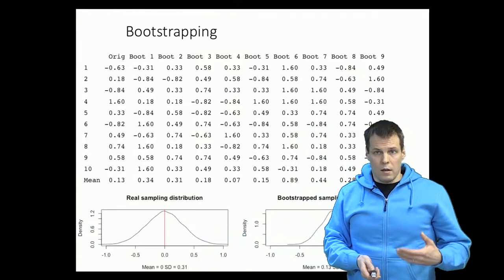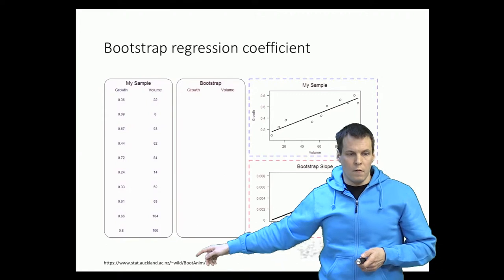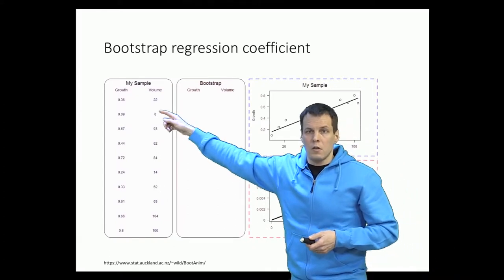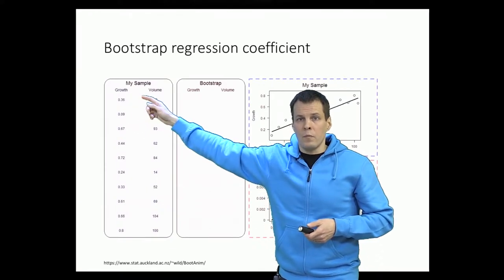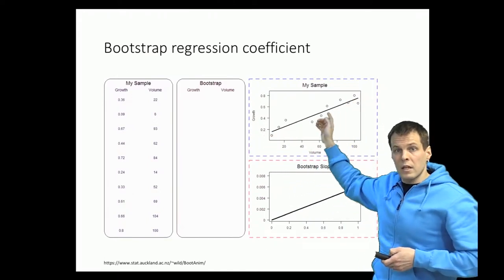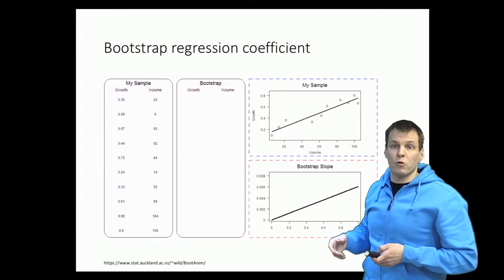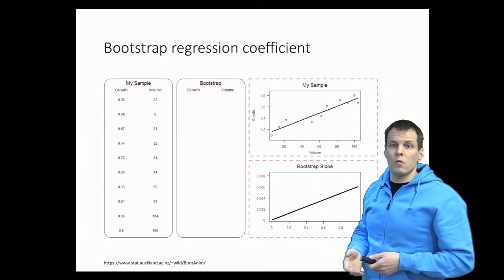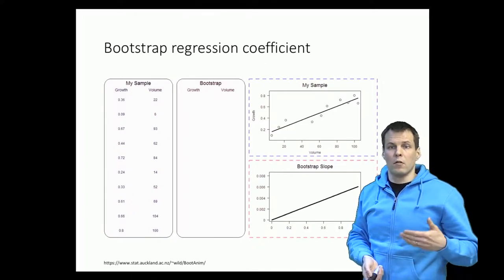Here is a demonstration of how bootstrapping works from a statistics department at the University of Auckland. We have an original sample with an x variable and a y variable, and we calculate a regression coefficient. We are interested in how much this regression coefficient — the slope — would vary if we were to take this sample over and over from the same population. For some reason we don't want to use the normal formula that our statistical software uses to calculate the standard error; we want to do it by bootstrapping.